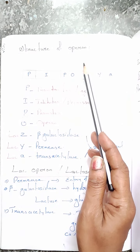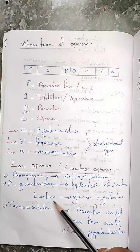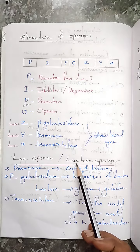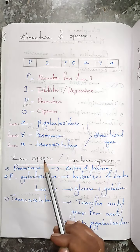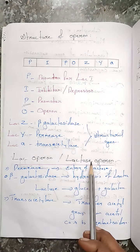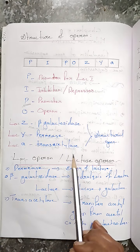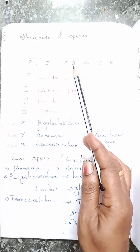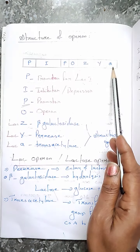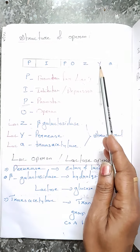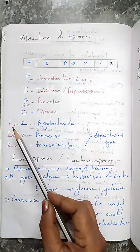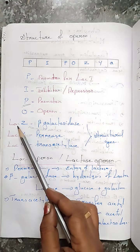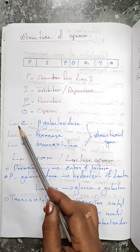One example of an operon is the lac operon, also known as the lactose operon. In the lac operon, the same P site, O site, and structural genes are present. The structural genes are mentioned as lac Z, lac Y, and lac A, to denote the lac operon or lactose operon.